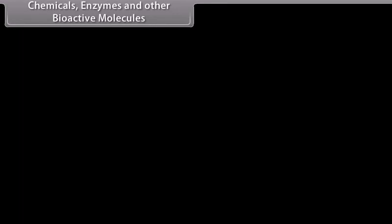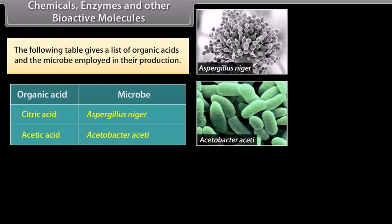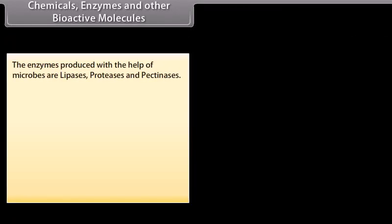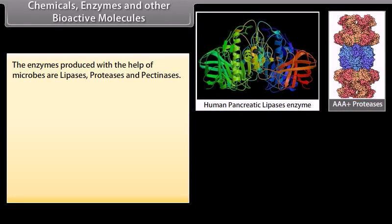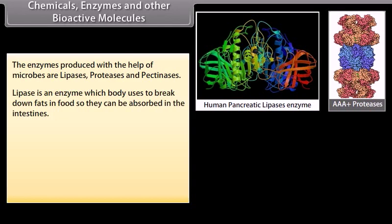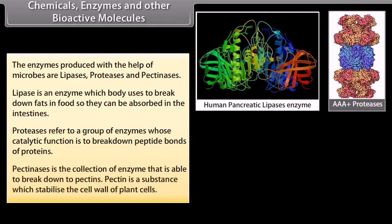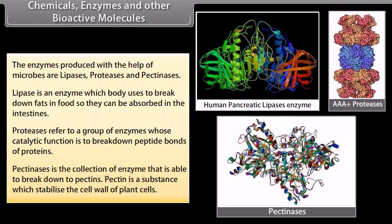Chemicals, enzymes and other bioactive molecules. The following table gives a list of organic acids and the microbe employed in their production. The enzymes produced with the help of microbes are lipases, proteases and pectinases. Lipase is an enzyme which the body uses to break down fat in food so they can be absorbed in the intestines. Proteases refer to a group of enzymes whose catalytic function is to break down peptide bonds of proteins. Pectinases are a collection of enzymes that are able to break down pectins — the substance which stabilizes the cell wall of plant cells.